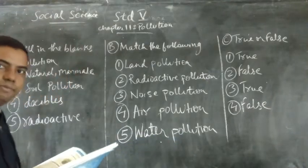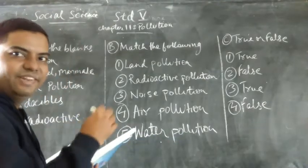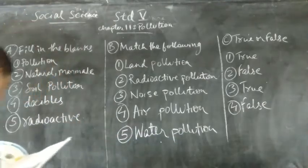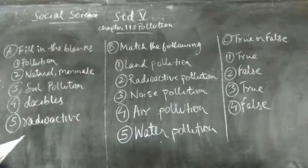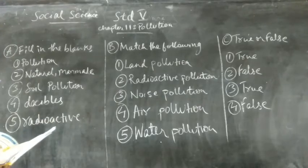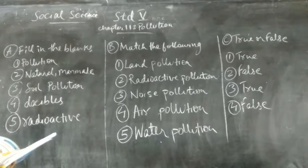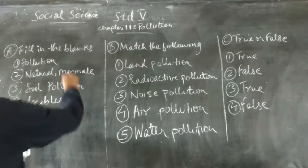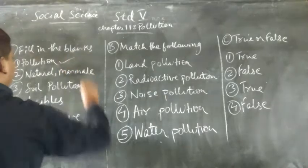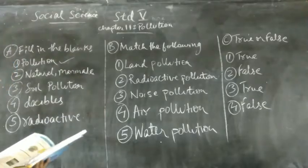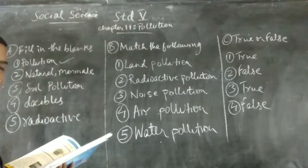Let's start with question number A, fill in the blanks. Question 1: Dash damages our environment. The answer is pollution. Pollution damages our environment.